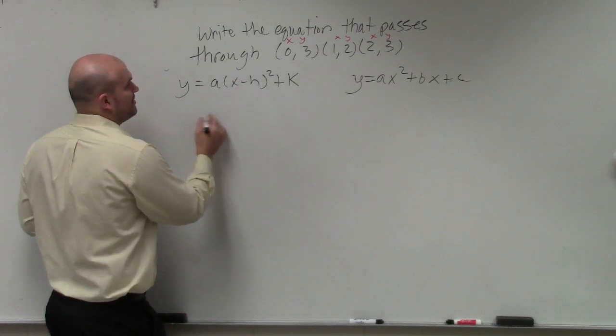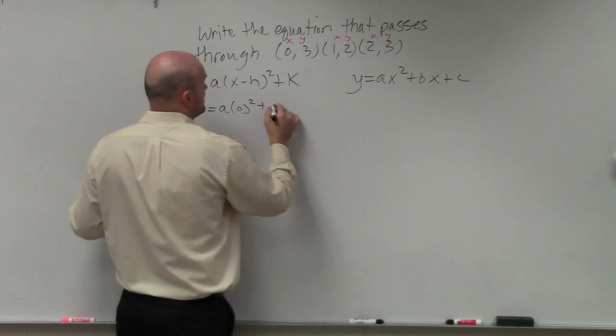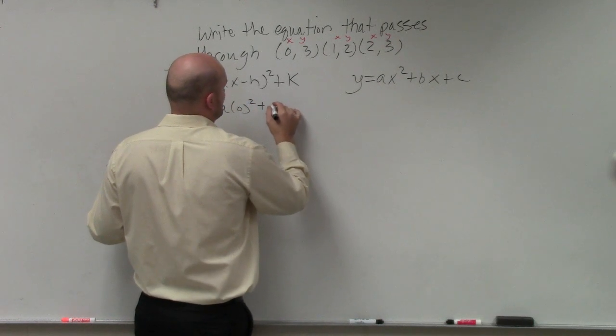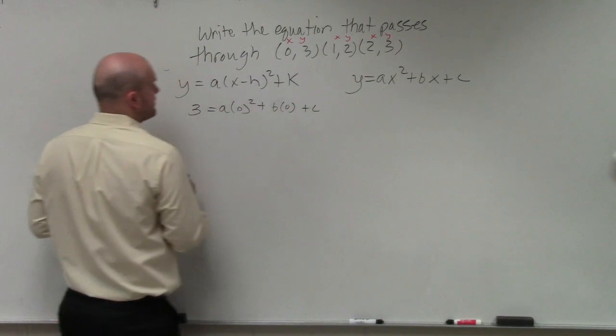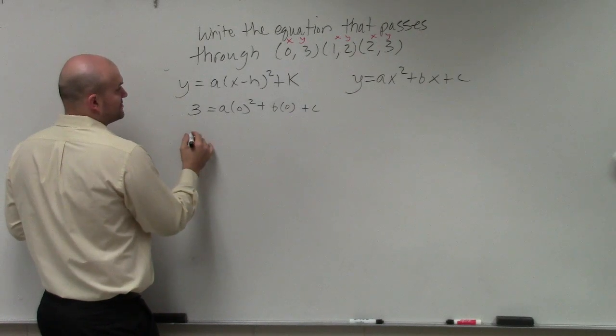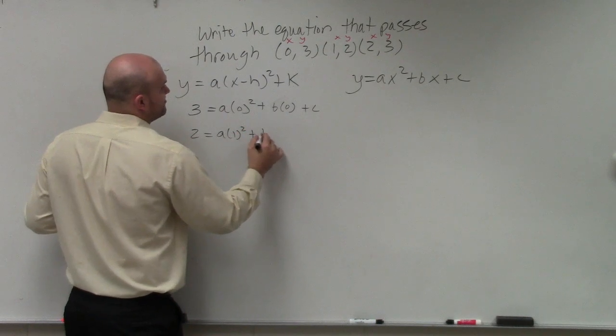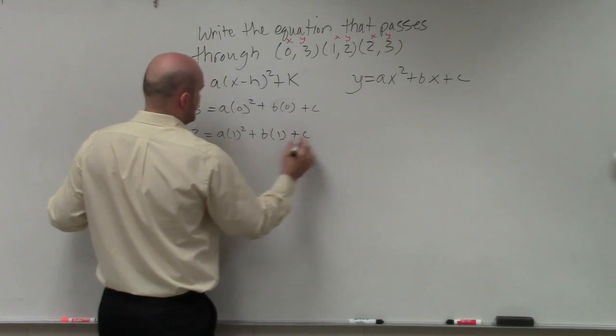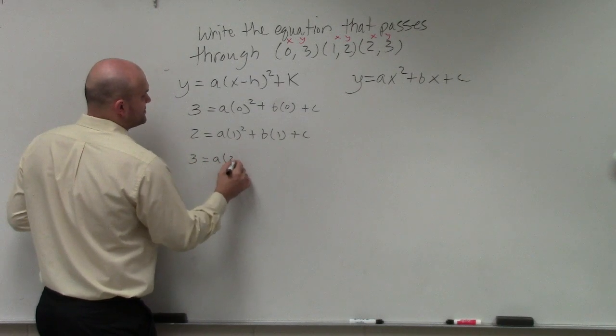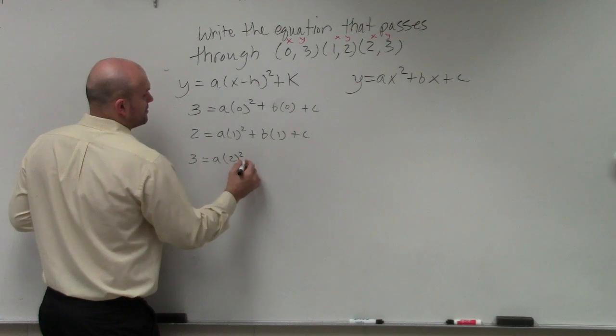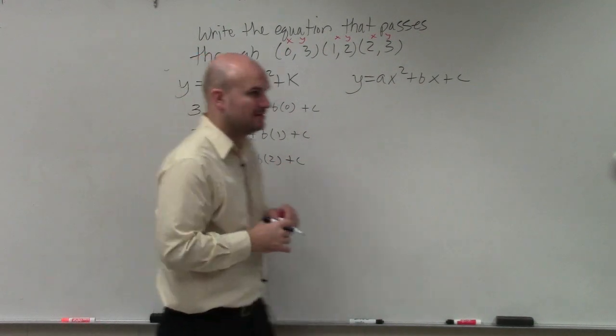OK. So if I plug them all for x and y, I have 3 equals a times 0 squared plus b times 0 plus c. Over here, next one, I have 2 equals a times 1 squared plus b times 1 plus c. And the last one, I end up having 3 equals a times 2 squared plus b times 2 plus c. Does everybody see what I did?